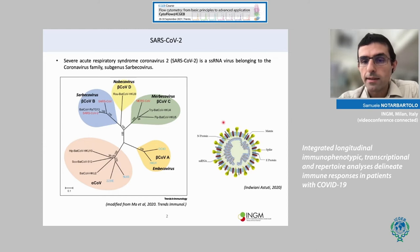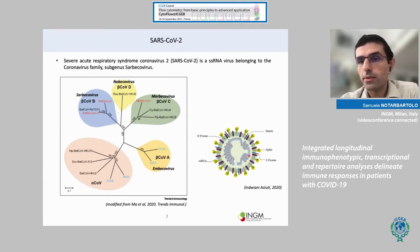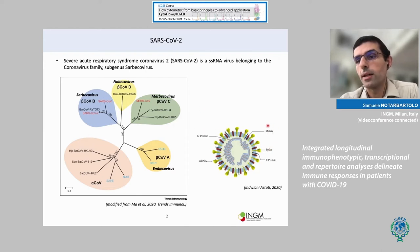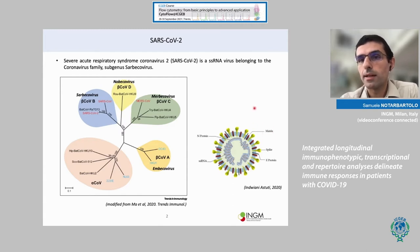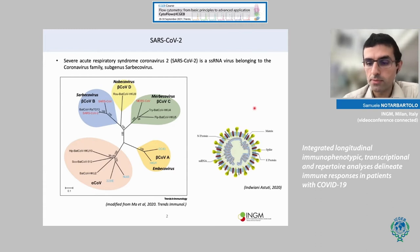And in this cartoon on the right, you see the most immunogenic proteins of the virus — especially the spike and the nucleoprotein, but also the matrix protein, which per se is not really immunogenic but is very abundant, and then becomes immunogenic for this reason.